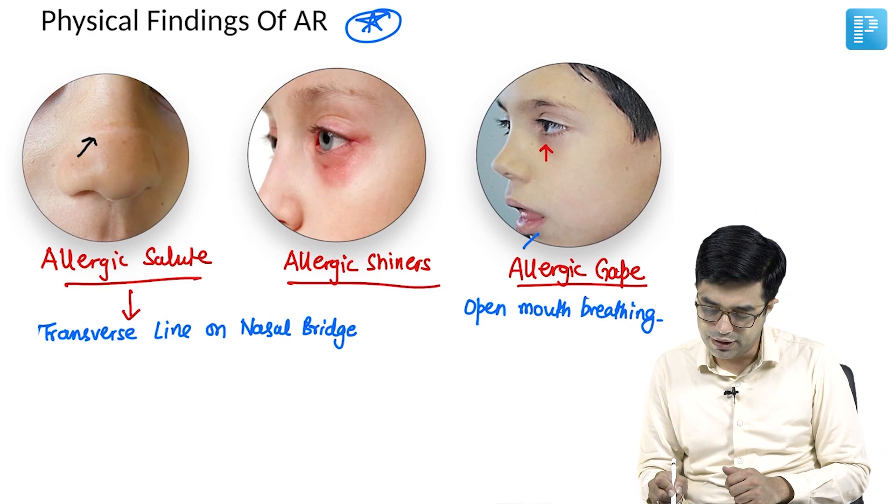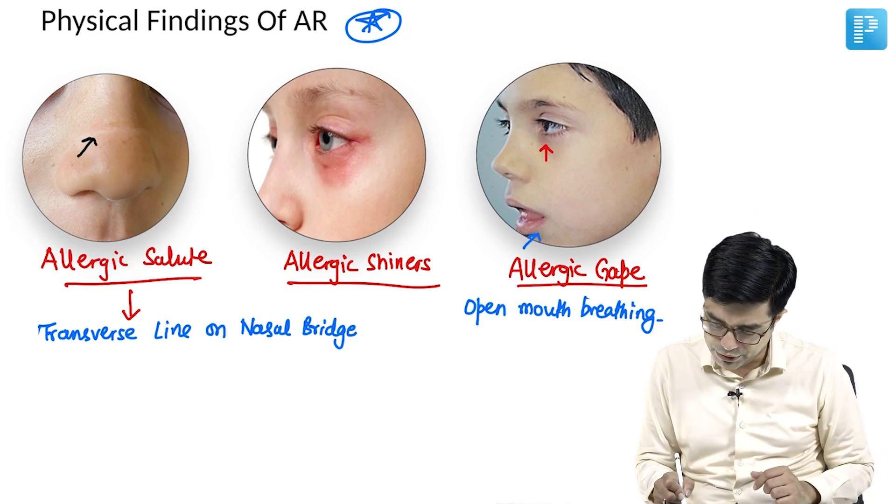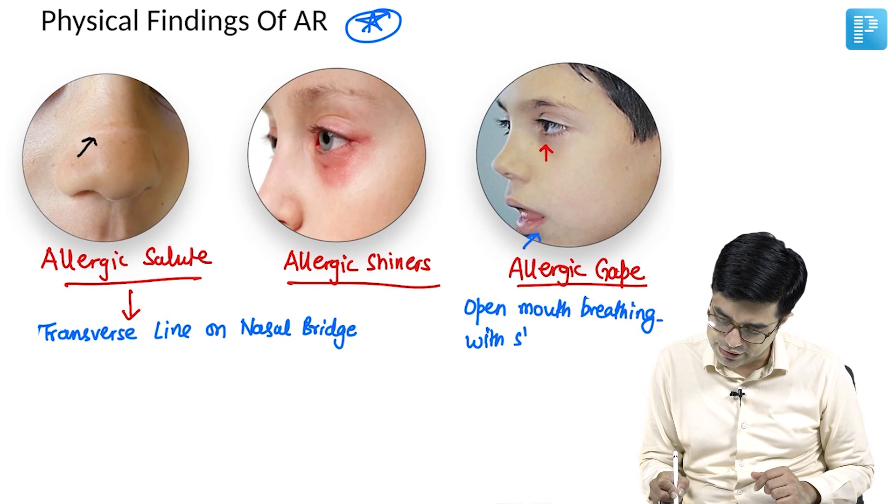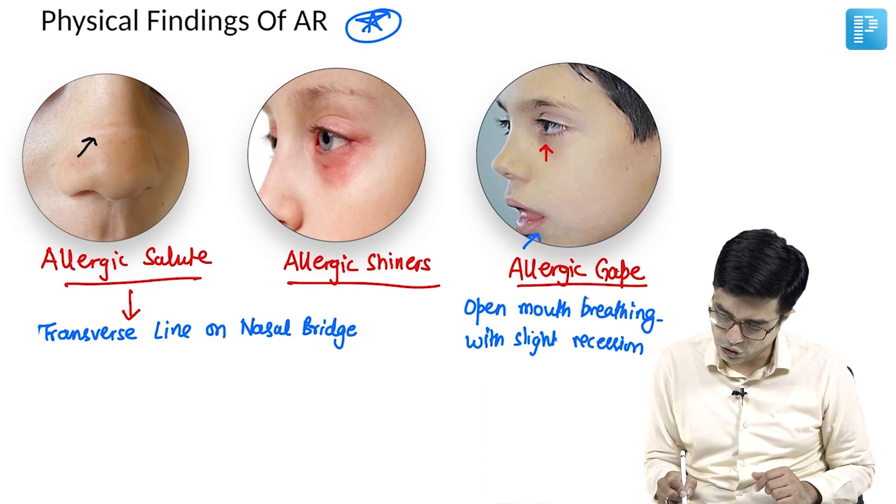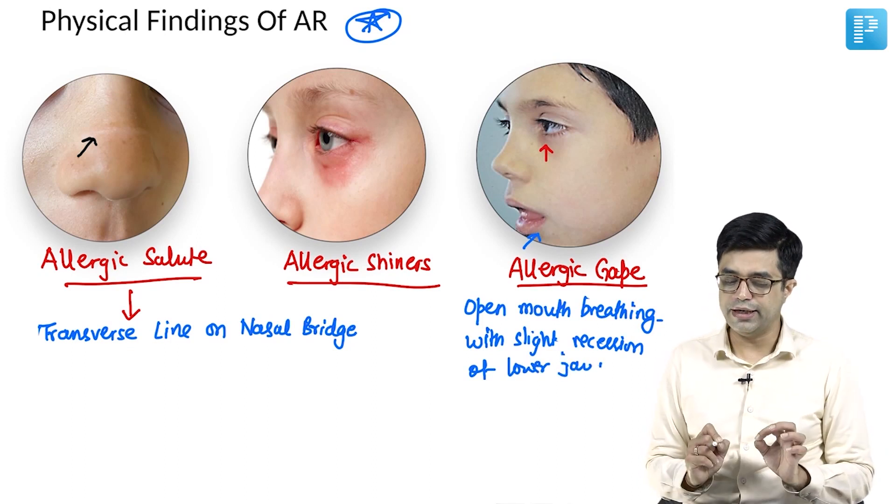And it will produce an appearance as you can see. Can you see that there is some recession of the lower jaw in this child? Open mouth breathing with slight recession of the lower jaw. That is called as allergic gape.